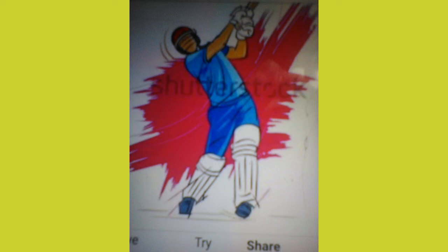13. Stumped: a batsman moves out of the crease to play the ball and misses. The keeper gathers the ball and disturbs the stumps with ball in hand. Then the batsman is declared out as stumped.